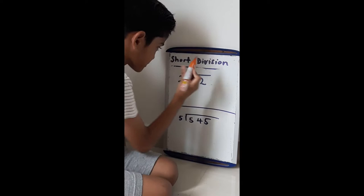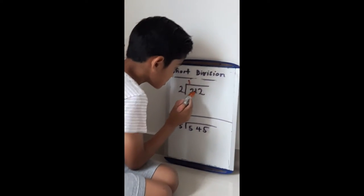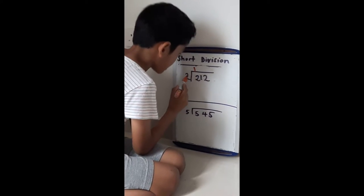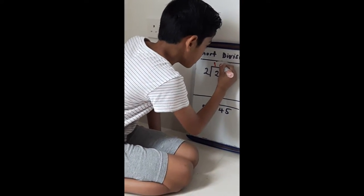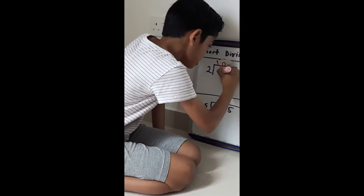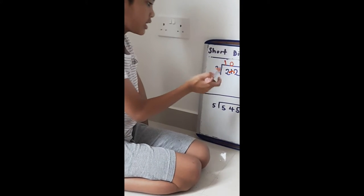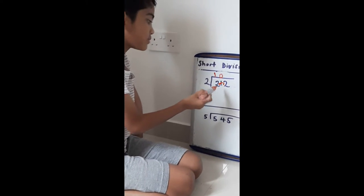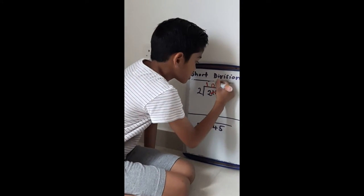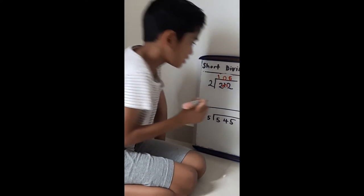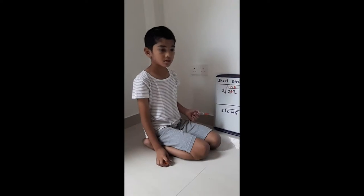2 divided by 2 is 1. Then 1 divided by 2 — you can't do 1 divided by 2, so you put a 0 here and carry the 1 next to the third number. So next, 12 divided by 2 is 6. You put a 6 here and there are no remainders.